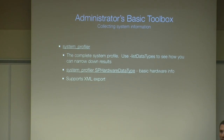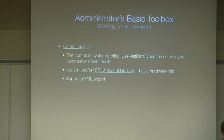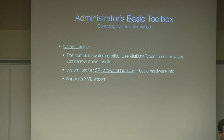System_profiler is of course the best way to get all the data you might need on your system. You can narrow down the list of data by using the list data types argument, which shows you all available categories. For example, if you just need a basic hardware report on CPU type, memory, and serial number, the SPHardwareDataType will get you that. Note this is not cached data — it's generated on demand — so running the full command can take quite a while. It supports outputting to XML for inventory collection scripts.